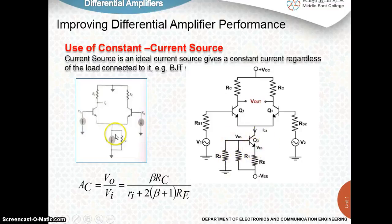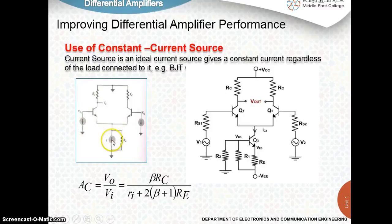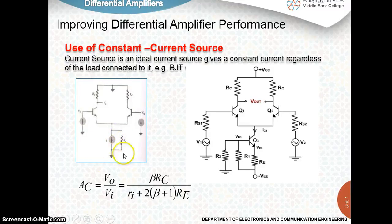This shows the ideal current source. From the emitter, you have a current source connected with a parallel resistance Re, and this resistance is assumed to be very high. This is the ideal current source as you have studied in your DC and AC electrical circuit analysis.